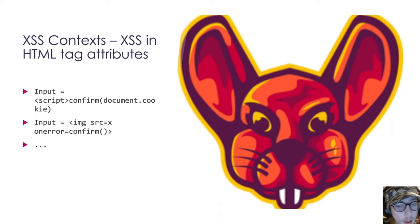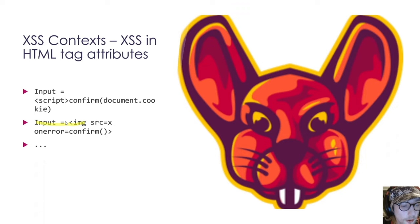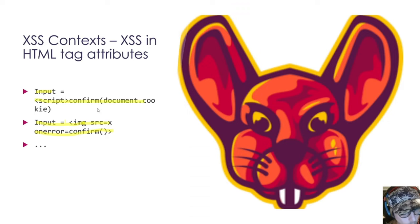You can also have direct HTML tag insertion. For example, a document with a script that prompts for your name and sets the innerHTML — that's DOM cross-site scripting. We can insert a script tag or an image tag like '<img src=x onerror=confirm()>' and it would directly put that script or image tag into the page. This lets us execute arbitrary JavaScript code and launch our cross-site scripting attack.